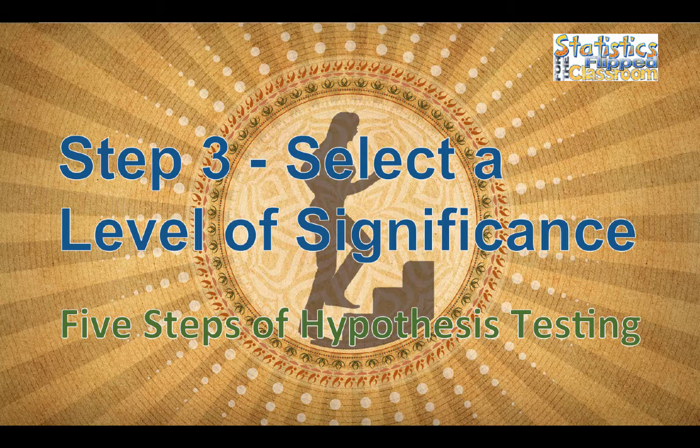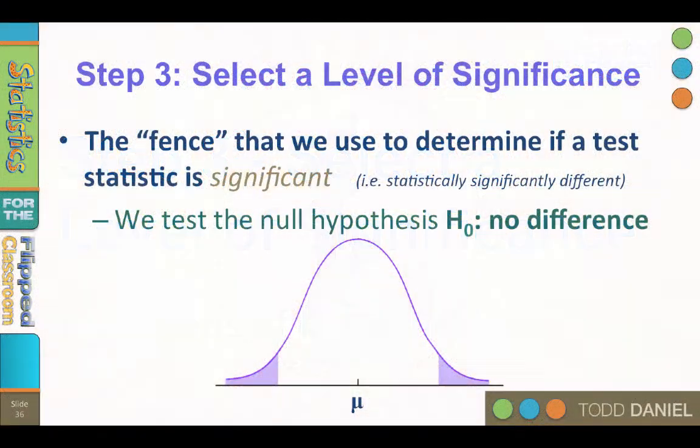Step three in the five steps of hypothesis testing is to select a level of significance. The level of significance sets a fence that we use to determine if our test statistic is significant, i.e., statistically significantly different.